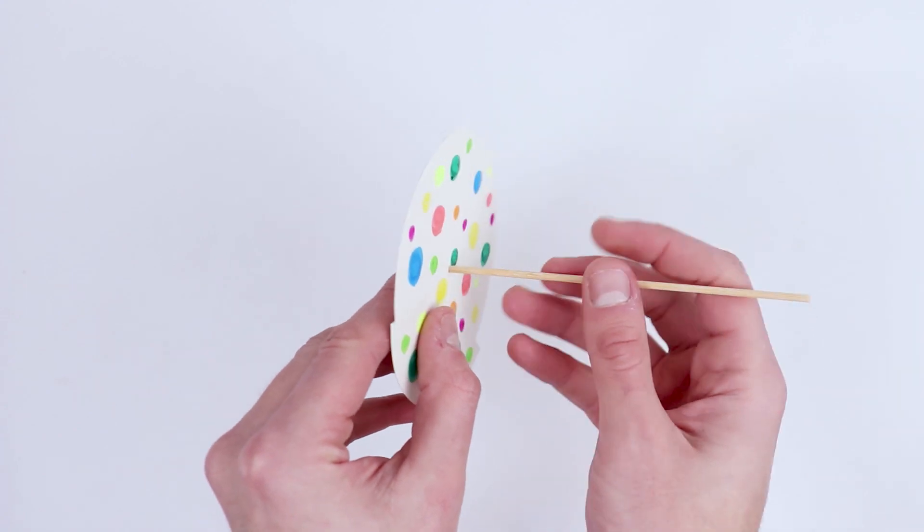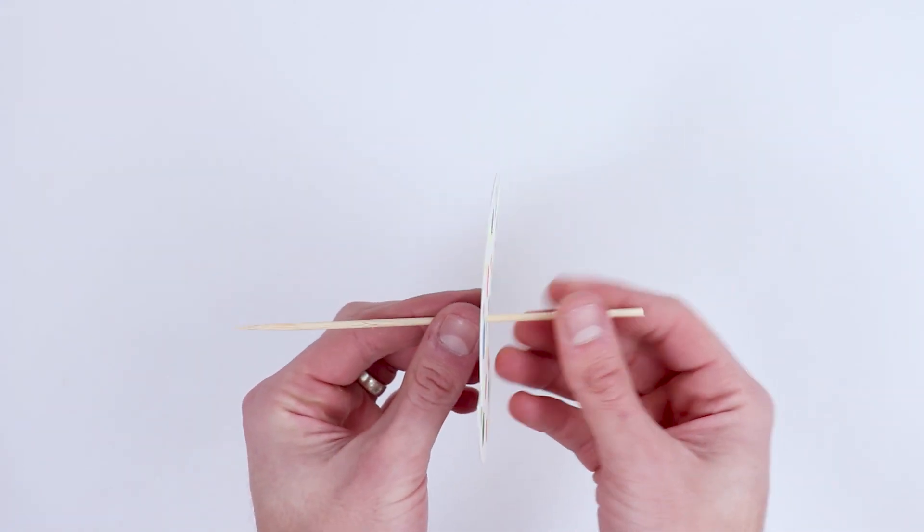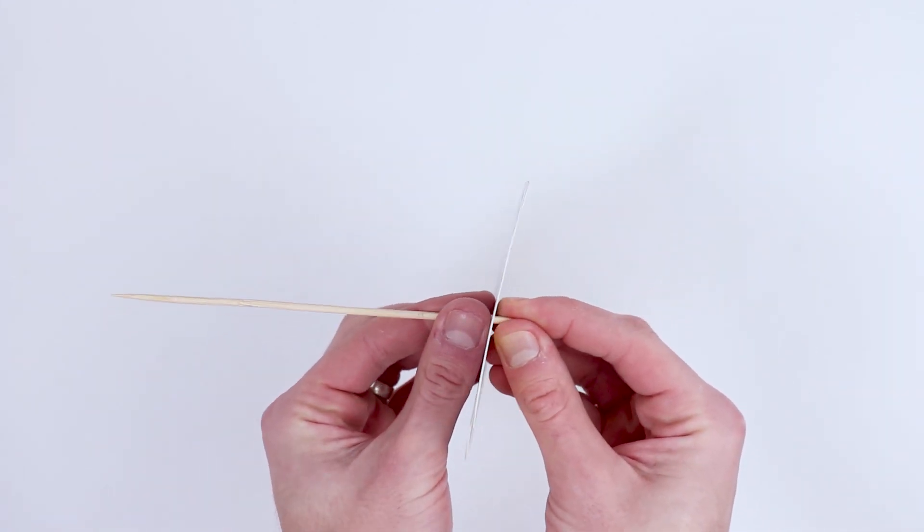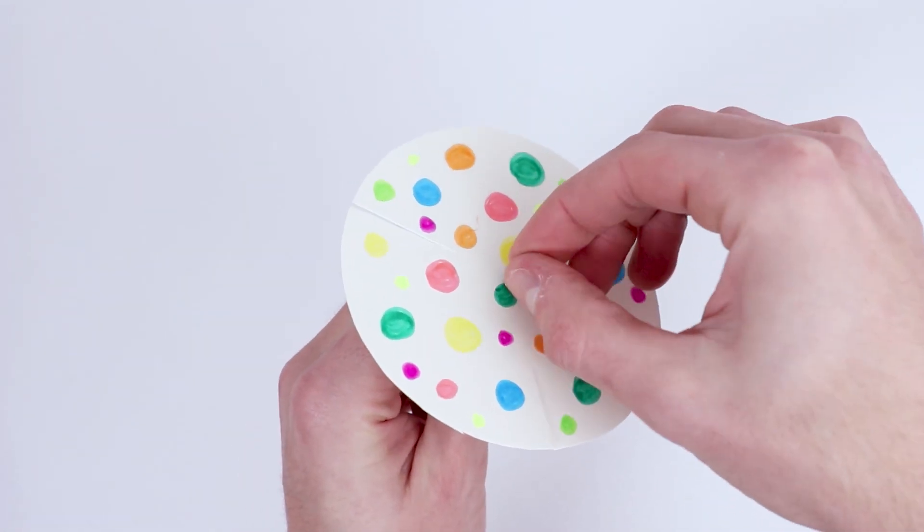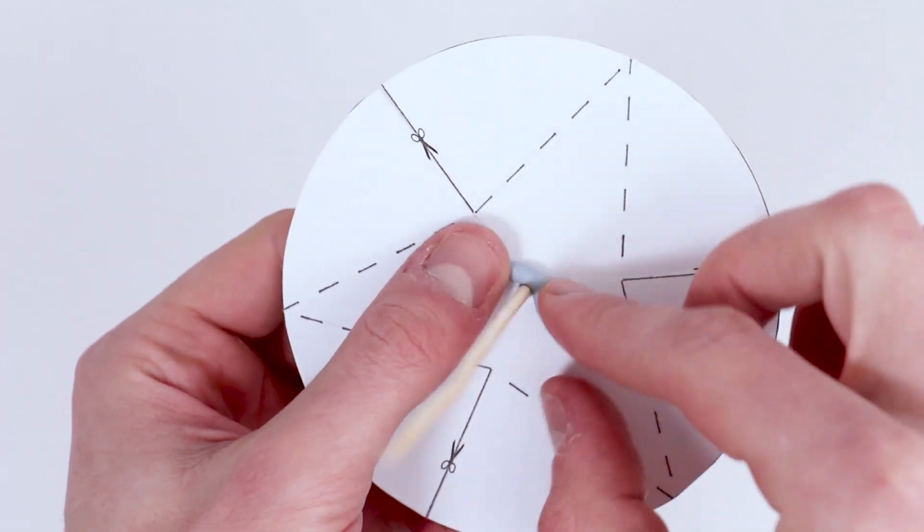Now using the pointy end of the stick, poke it through your fan blades through the hole that you initially made with the drawing pin. Secure the stick in place using blue tack both on the top and on the underside of the fan blades.